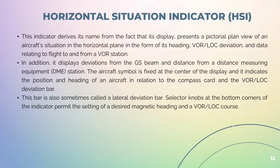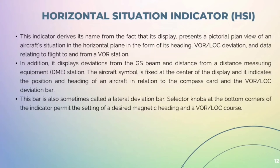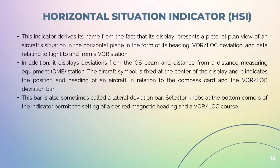Horizontal Situation Indicator: This indicator derives its name from the fact that it displays a pictorial plan view of an aircraft's situation in the horizontal plane in the form of its heading, VOR/LOC deviation, and data relating to the flight to and from a VOR station. In addition, it displays deviation from the GS beam and the distance from a Distance Measuring Equipment (DME) station. The aircraft symbol is fixed at the center of the display and indicates the position of the heading in relation to the compass card and the VOR/LOC deviation bar, also sometimes called the lateral deviation bar. Selector knobs at the bottom corners permit the setting of the desired magnetic heading and a VOR/LOC course.